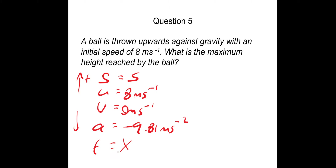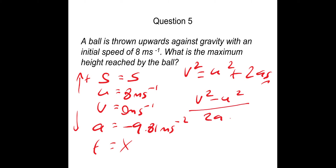To get displacement we need an equation without time, so V squared equals U squared plus 2AS. Rearranging for S: S equals V squared minus U squared divided by 2A. Putting numbers in: V is zero, so it's minus 8 squared which is minus 64, divided by 2 times minus 9.81 which is minus 19.62. The negatives cancel, and putting that in the calculator gives 3.3 metres.